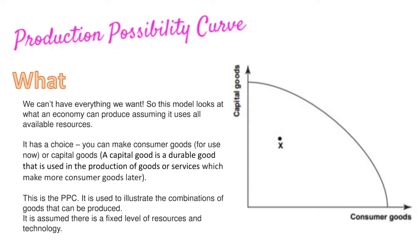You can make consumer goods, which we use now — things such as clothes and food — or capital goods, which are durable goods used in the production of other goods and services. For example, a tractor is a capital good that helps grow vegetables, which would be a consumer good. Capital goods are future-oriented and help us produce consumer goods. These are the two items we use for our production possibility curve, which illustrates combinations of goods that can be produced, assuming a fixed level of resources and technology.